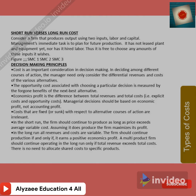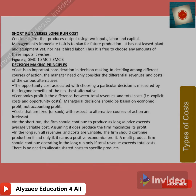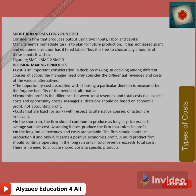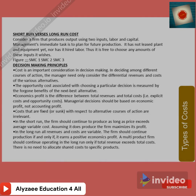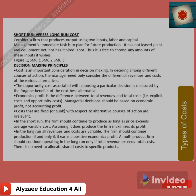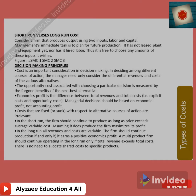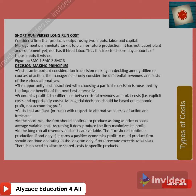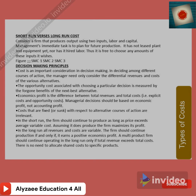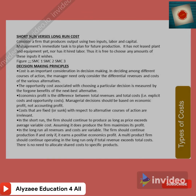In the short run, the firm should continue to produce as long as price exceeds average variable cost, which maximizes the firm's value. In the long run, all revenues and costs are variable, and the firm should continue production if and only if it earns a positive economic profit. In the long run, the firm should continue operating only if total revenue exceeds total cost, and there is no need to allocate shared costs to specific products.